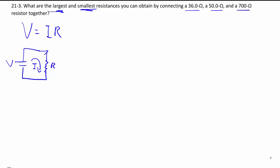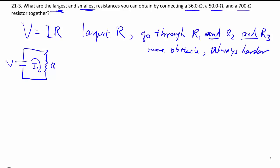With these three different resistors, I can connect them first of all to make the biggest resistance. In order to make the flow the smallest, I want to force the flow through R1 and R2 and R3, in the sense that if there's more obstacles in the way, it is always going to be harder no matter how small the obstacle is.